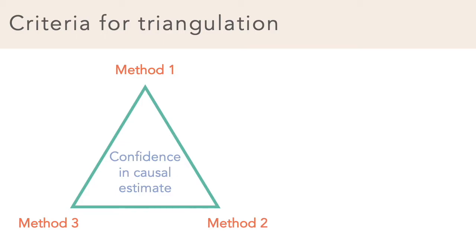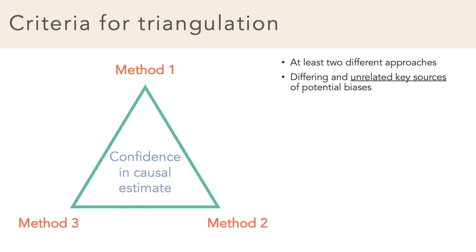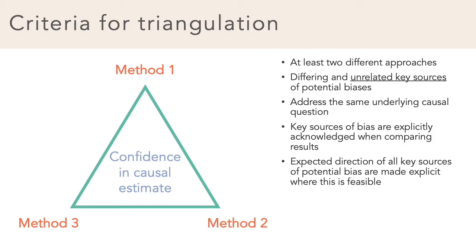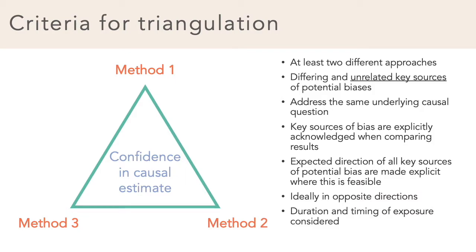Here are some criteria for triangulation. Results need to come from at least two — but ideally more — different approaches with differing and unrelated key sources of potential biases. The different approaches need to address the same underlying causal question, and for each approach the key sources of bias are explicitly acknowledged when comparing results. The expected direction of all key sources of potential bias should be made explicit where feasible, and ideally there are approaches with potential biases that are in opposite directions. The duration and timing of exposure assessed by each approach should also be taken into account.